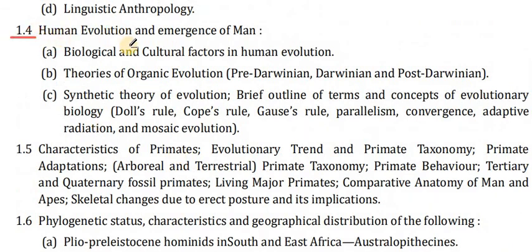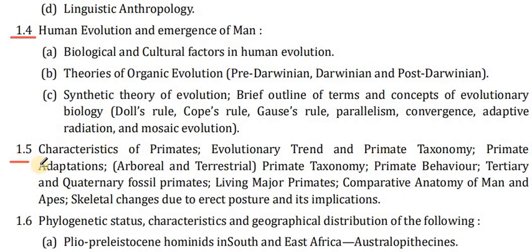Point 1.4 covers Human Evolution and emergence of man — biological and cultural factors in human evolution. Theories of organic evolution: pre-Darwinian, Darwinian and post-Darwinian, and the Synthetic Theory of Evolution. Key concepts include Doll's Rule, Cope's Rule, Gause's Rule, parallelism, convergence, adaptive radiation, and mosaic evolution. Point 1.5 covers characteristics of primates, primate taxonomy, arboreal and terrestrial primate adaptation, primate behavior, and comparative anatomy of man including skeletal changes due to erect posture.